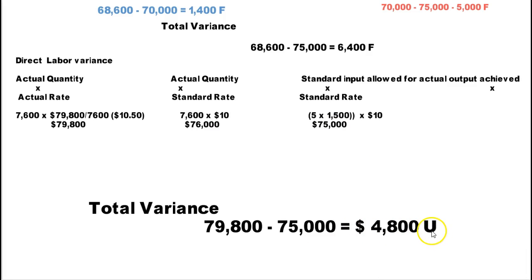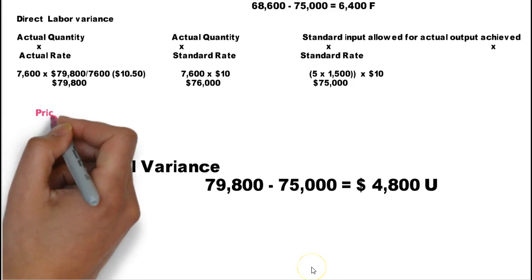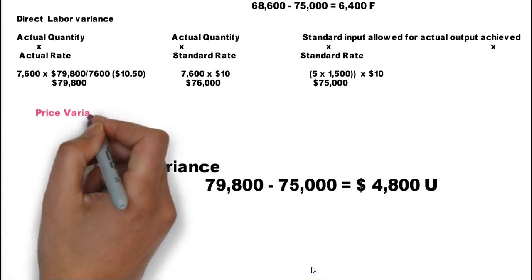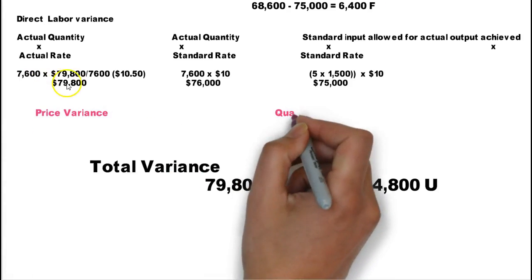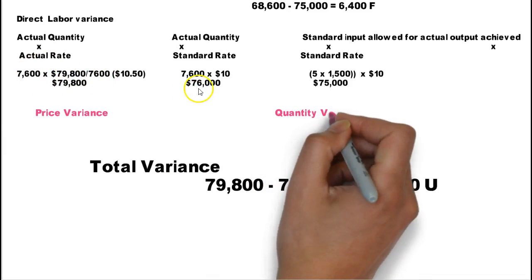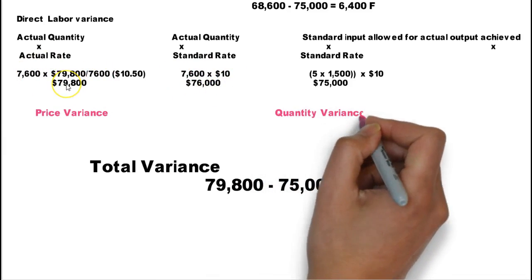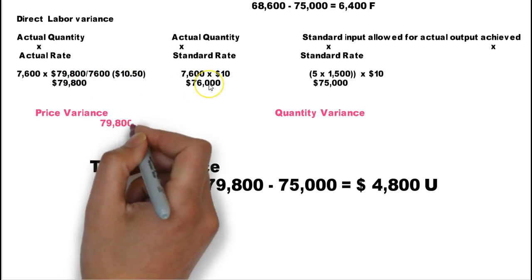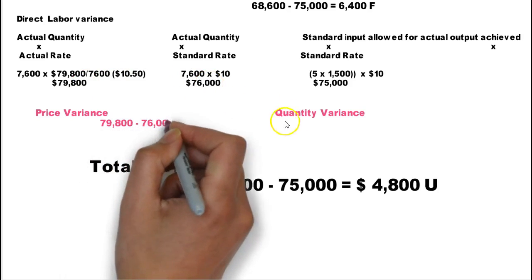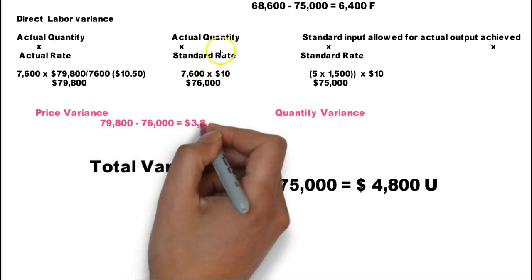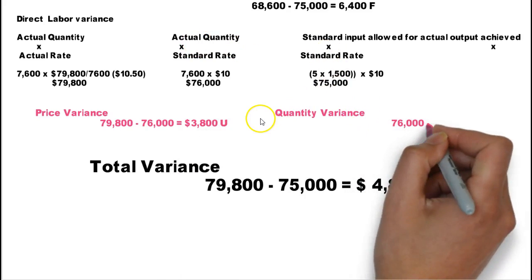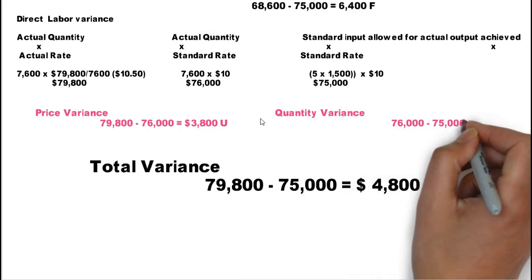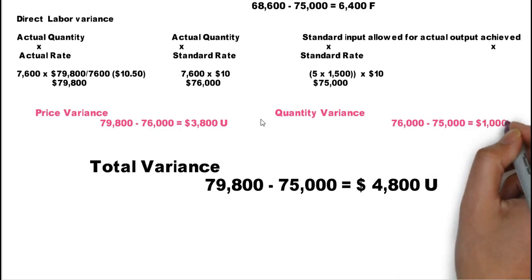And we have $4,800 unfavorable. And again, that is broken down into a price variance, which is $79,800 minus the $76,000. And again, here we go, left is greater than right, so it's unfavorable. And a quantity variance, the difference between what I actually used and what I should have used, and that too is unfavorable by $1,000.